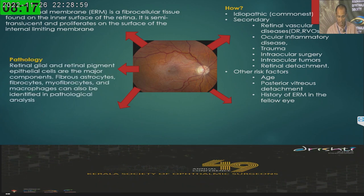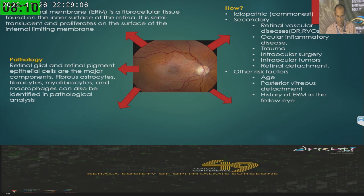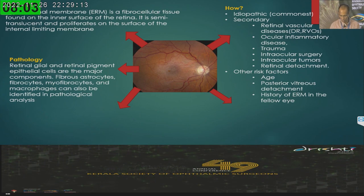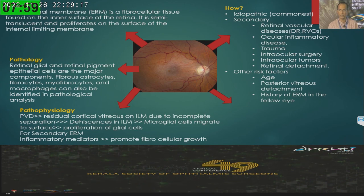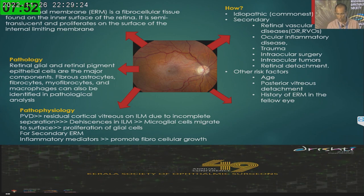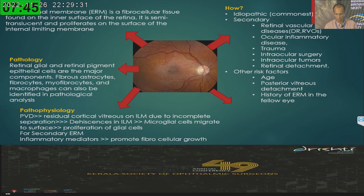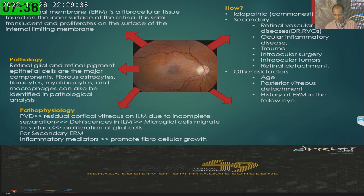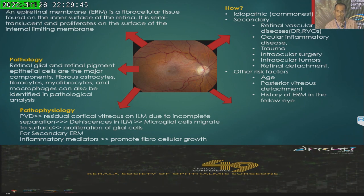The membrane is composed of retinal glial and retinal pigment epithelial cells, fibrous astrocytes, fibrocytes, myofibrocytes, and macrophages, depending on the pathology. The pathophysiology, especially for idiopathic ERM, is related to anomalous PVD — when PVD occurs, there will be residual cortical vitreous on the ILM due to incomplete separation. This can proliferate into an epiretinal membrane. Additionally, there can be dehiscences in the ILM through which microglial cells migrate to the surface, resulting in glial cell proliferation over the ILM. For secondary ERM, other inflammatory mediators also contribute.